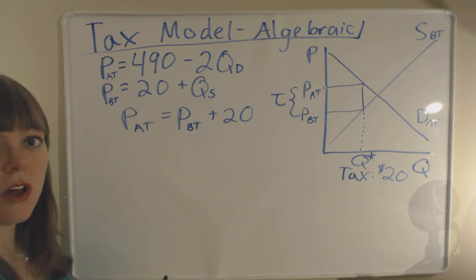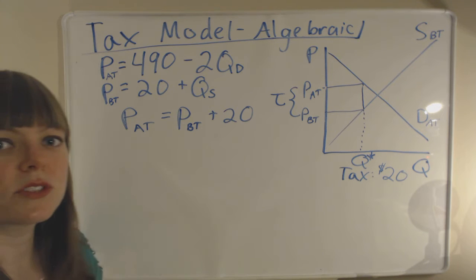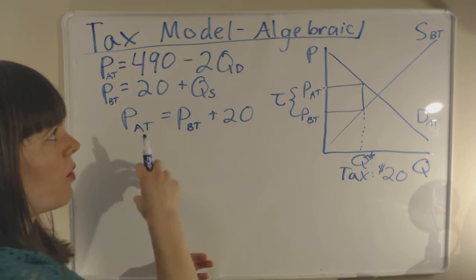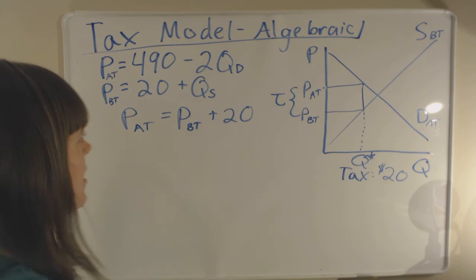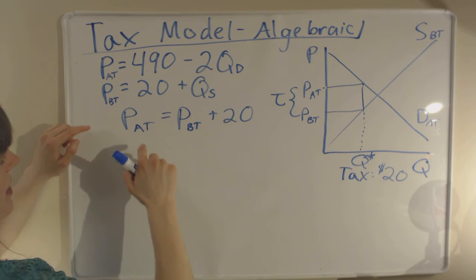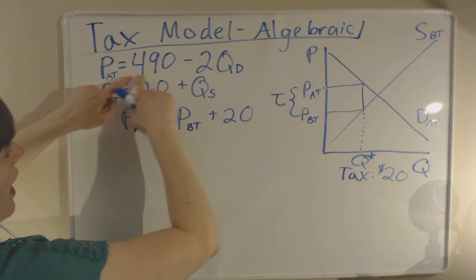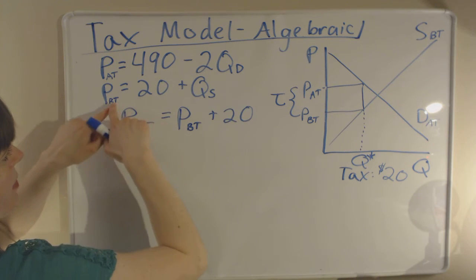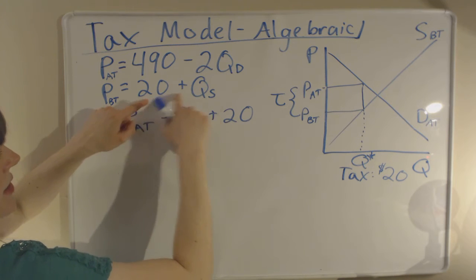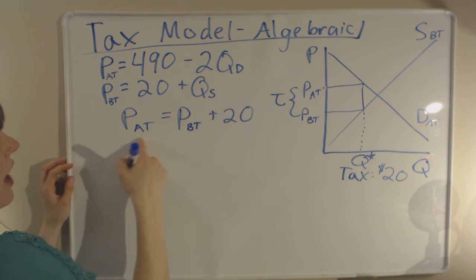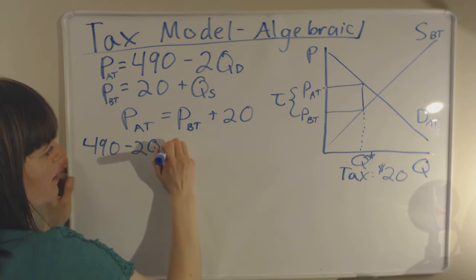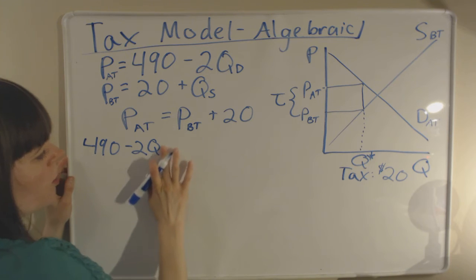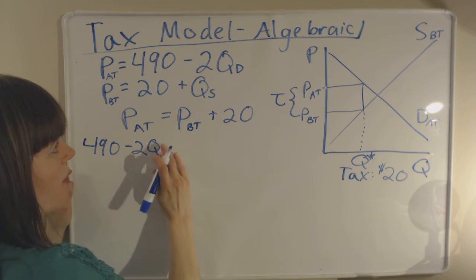Now we just need to solve our three equations and three unknowns. And you can always do that by plugging one equation into another any way you want until you've finished the problem. So I'm going to plug the after-tax price, this piece, into here, and I'm going to plug the before-tax price, this piece, into here. So we have our after-tax price, which we know is 490 minus 2QD, quantity demanded.